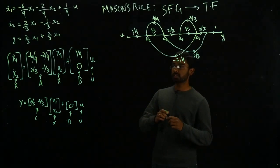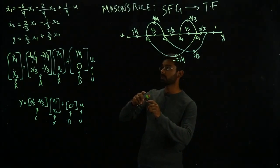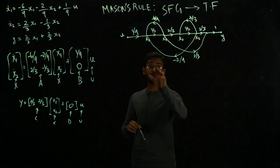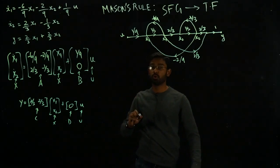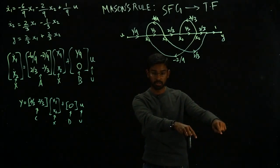So we have run out of time, but we have represented the state space equations in terms of the signal flow graph. To find out how to go from here to transfer function using what is called Mason's rule, please click on this link right over here.